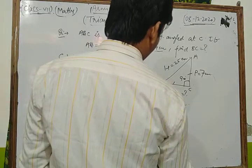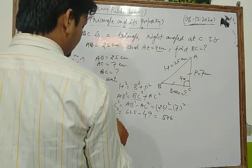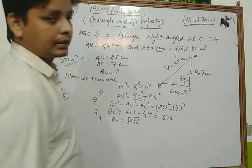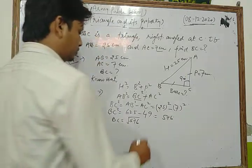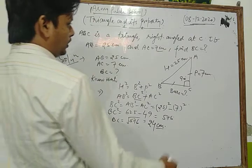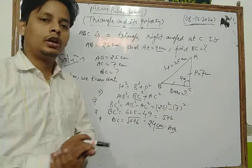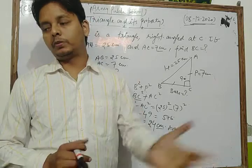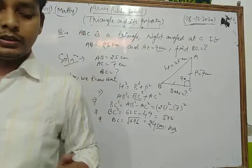So BC² equals 576. Therefore BC equals the square root of 576, which is 24 centimeters. In this way you can solve each and every question of your NCERT exercise based on right-angled triangles and the Pythagoras property.